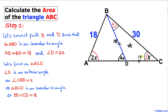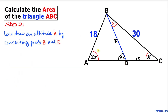Our next step: let's draw an altitude perpendicular by connecting point B with point E somewhere on line segment AD, dropping a perpendicular giving a 90-degree angle.